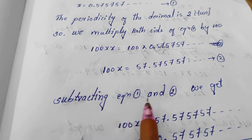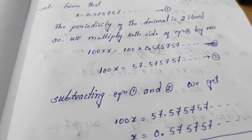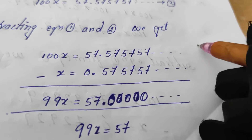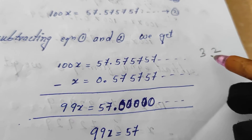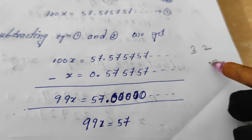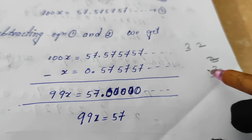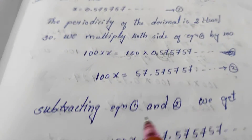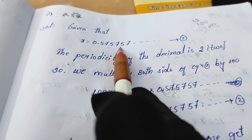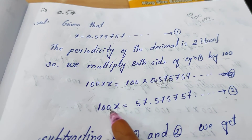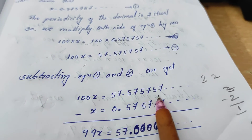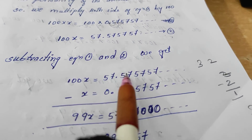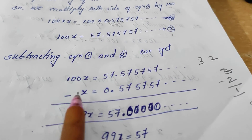What we have to do next? We subtract equation 1 from equation 2. Equation 2 is greater, so we write it first, then subtract equation 1. Just as 3 minus 2 gives 1 (and not the other way), we take the greater one first. On the LHS: 100x minus x equals 99x. On the RHS: 57.5757 minus 0.5757 — the decimal parts cancel.